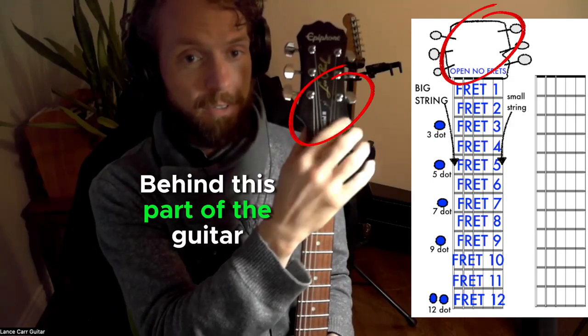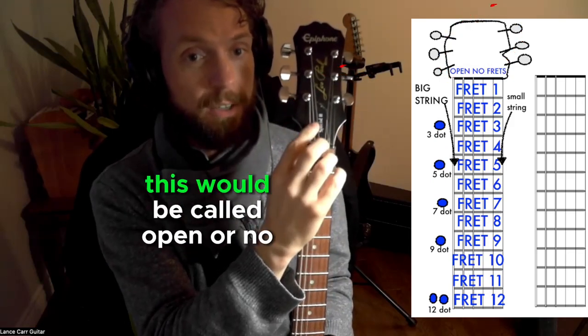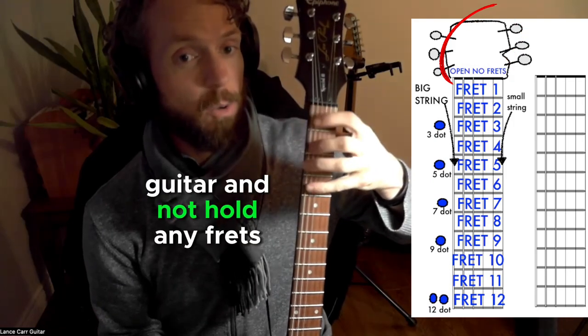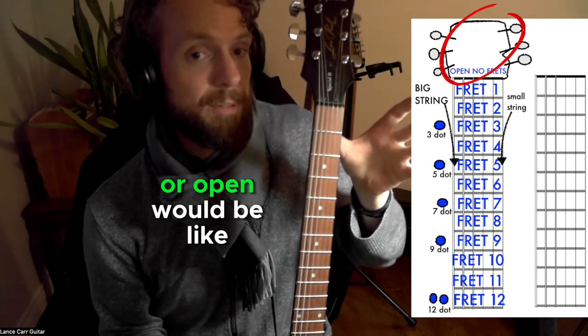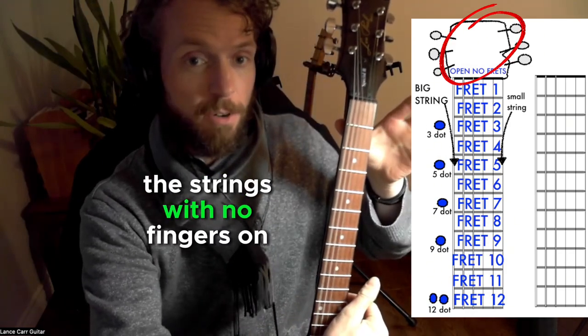Behind this part of the guitar, if we ever put any numbers or circles or any notes here, this is what we call open or no frets. So if you were to play the guitar and not hold any frets and have your hand open, that would be no frets or open. It would be like playing the strings with no fingers on.